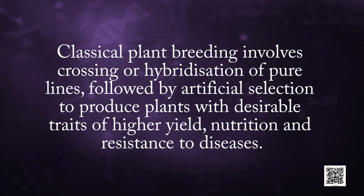Classical plant breeding involves crossing or hybridization of pure lines followed by artificial selection to produce plants with desirable traits of higher yield, nutrition and resistance to disease. With advancement in genetics, molecular biology and tissue culture, plant breeding is now increasingly being carried out by using molecular genetic tools.